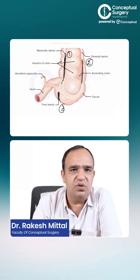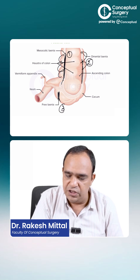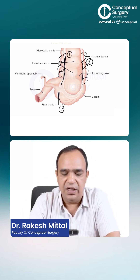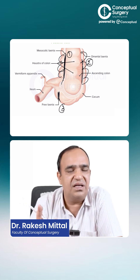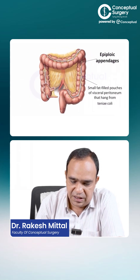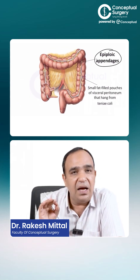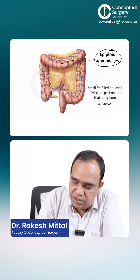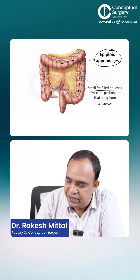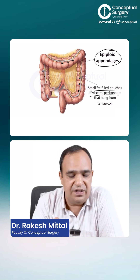The three identifying features are: first, haustrations — you can see these haustrations here; second, teniae coli; and third, appendices epiploicae, which are fat-filled pouches. You can see these small dots all across the colon — these are small fat-filled pouches, and they are only found in the large bowel, not in the small bowel or anywhere else.